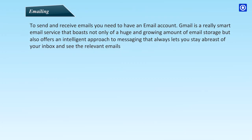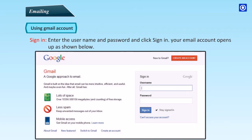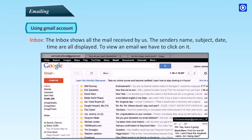Emailing: To send and receive emails, you need to have an email account. Gmail is a really smart email service that boasts not only of a huge and growing amount of email storage, but also offers an intelligent approach to messaging that always lets you stay abreast of your inbox and see the relevant emails. Using Gmail Account — Sign in: Enter the username and password and click Sign In. Your email account opens up. The Inbox shows all the emails received, with the sender's name, subject, date, and time all displayed.